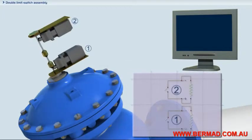The double limit switch assembly is equipped with two electric switches which send a signal to a control system when the Bermod 700 series valve is in the fully open position and when it's in the closed position.